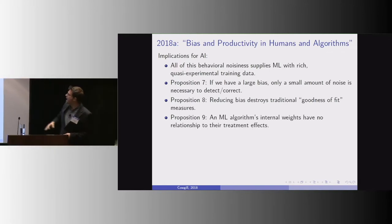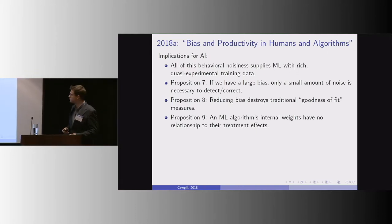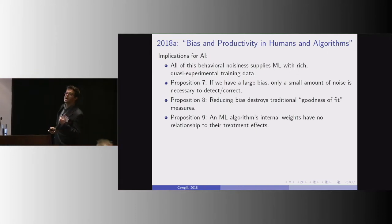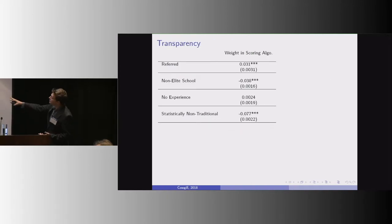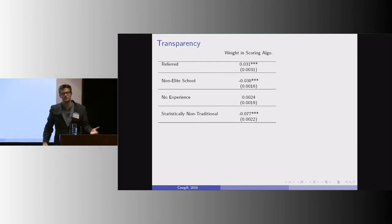And then finally, machine learning algorithms' internal weights have no relationship at all to their treatment effects. And so this may come up in the discussion as well, but here's what I mean. A common way to think about regulating algorithmic bias is to take a look at the insides, the internal weights or coefficients of an algorithm, and then try to sort of quasi-interpret them.